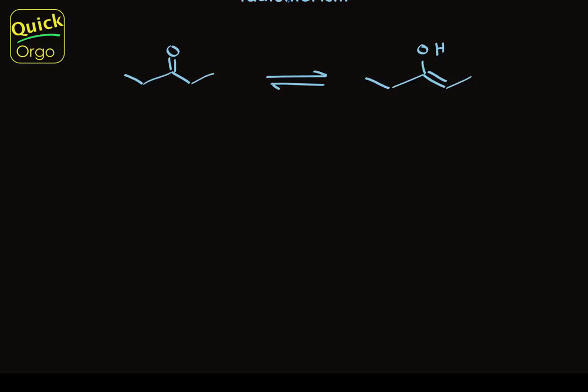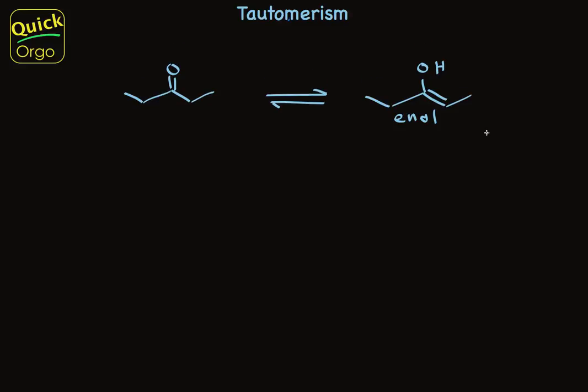Ketones generally are in equilibrium with a form known as an enol, a name that comes from the fact that this is a combination functional group. It's a combination of an alkene and an alcohol.